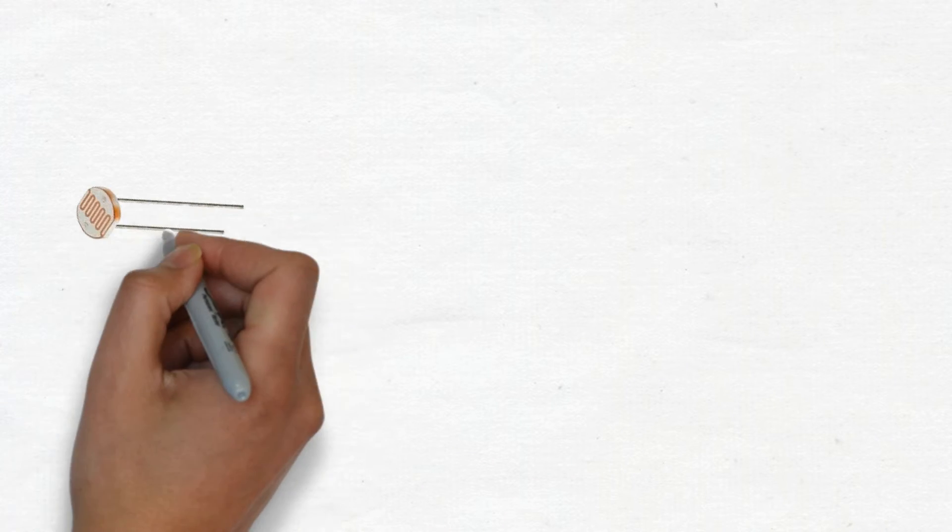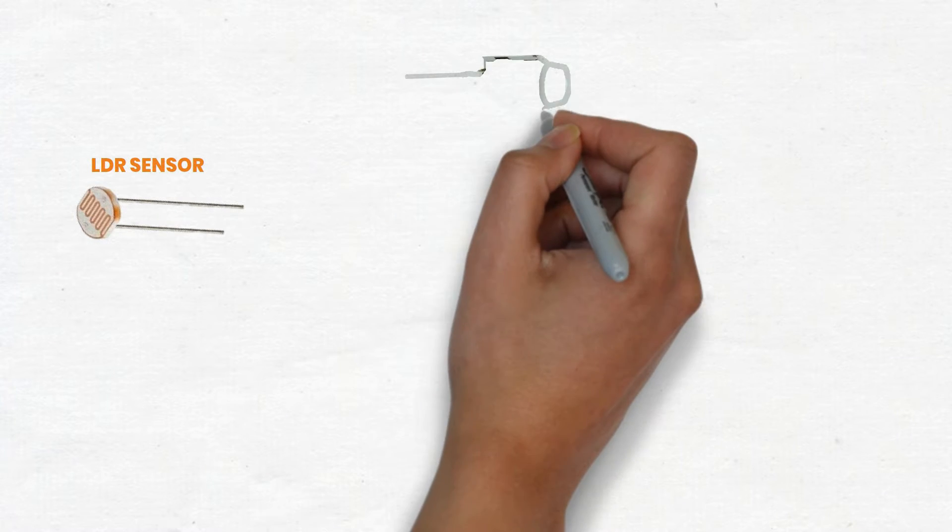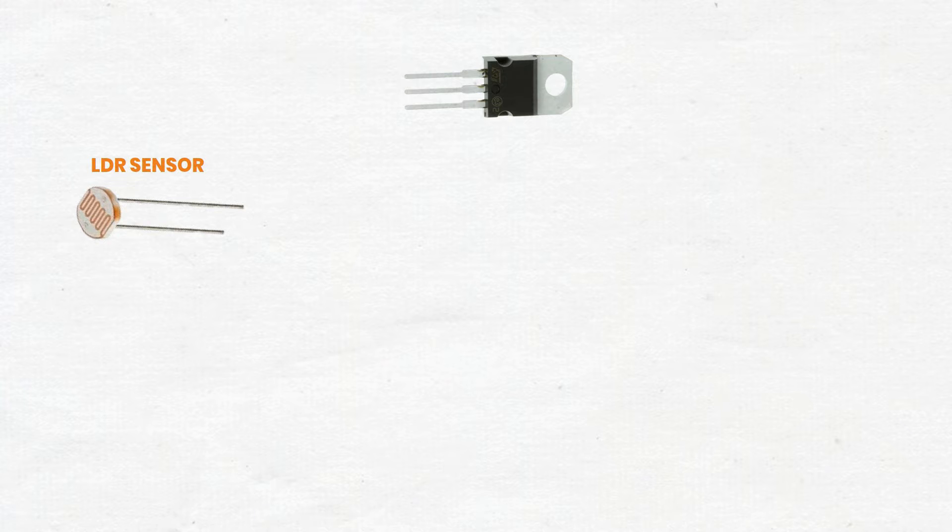Welcome to this step-by-step tutorial on building an LDR, light-dependent resistor, sensor circuit with a 5-pin relay, a transistor, a 6V voltage regulator, and a potentiometer.